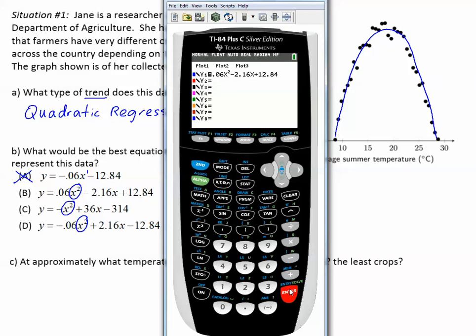We can also graph the other two at the same time, -x² + 36x - 314. And the third one is -0.06x² + 2.16x - 12.84.